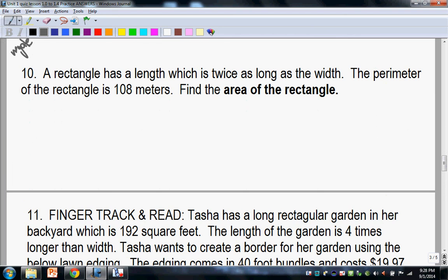It says a rectangle has a length which is twice as long as the width. The perimeter of the rectangle is 180 meters. Find the area. Let's take this one step at a time. It says a rectangle, so we have a rectangle. And the length is, that's an equal sign, twice as long as the width. So, there's our width, and it's going to be twice as long. So, we know our length equals twice our width. Length equals twice the width, and this would just be the width.